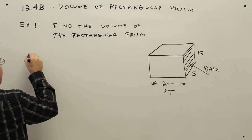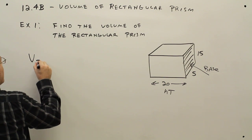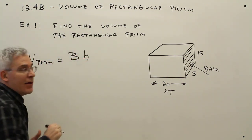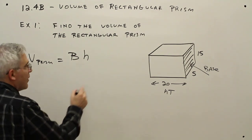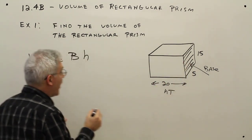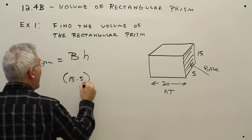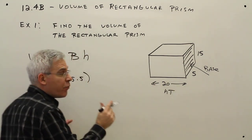Recall the formula. The volume of a prism is simply the area of the base times the height. In this case, the base is a rectangle. So it's going to be 15 times 5, and then the height is 20.